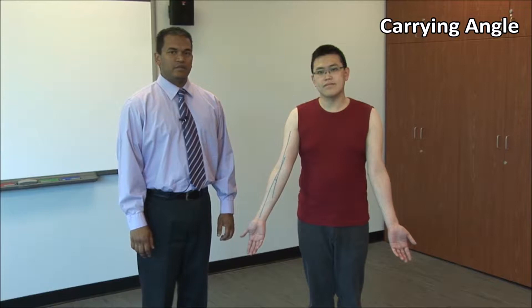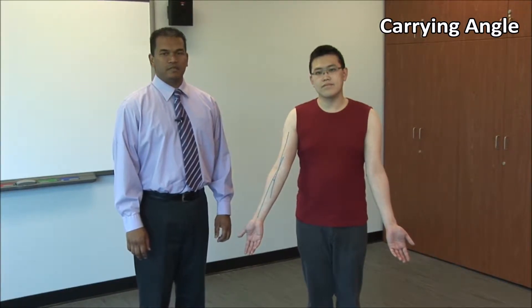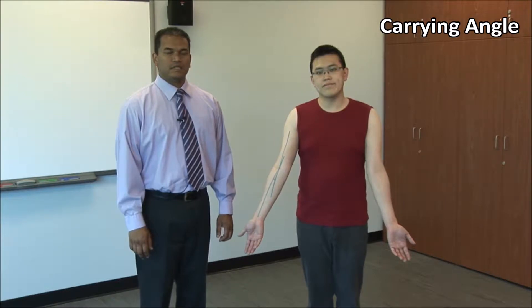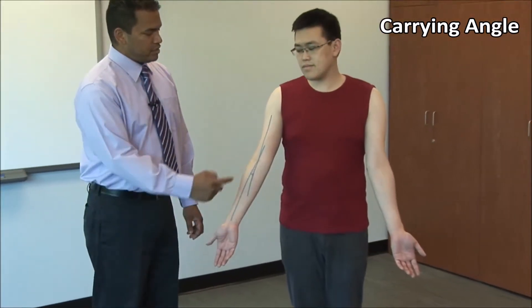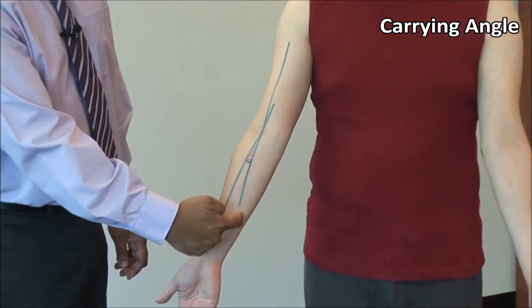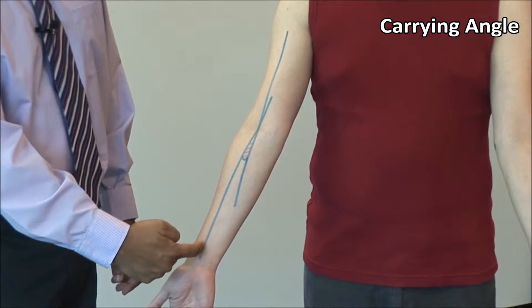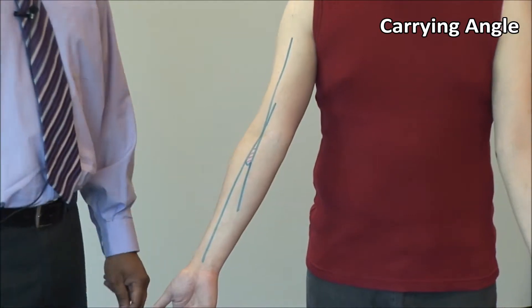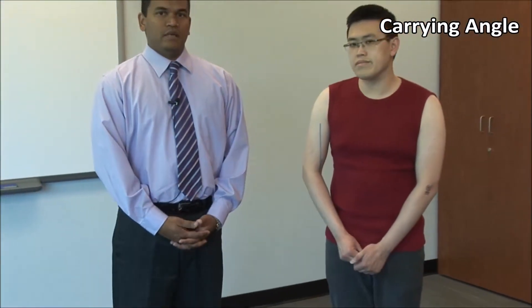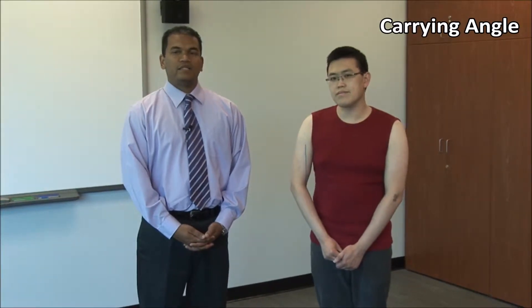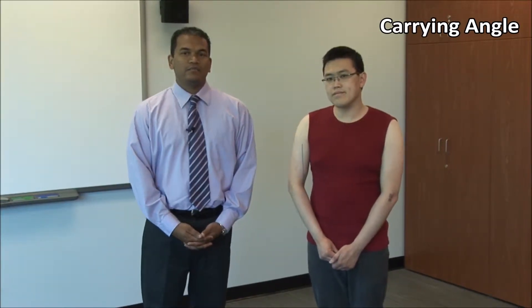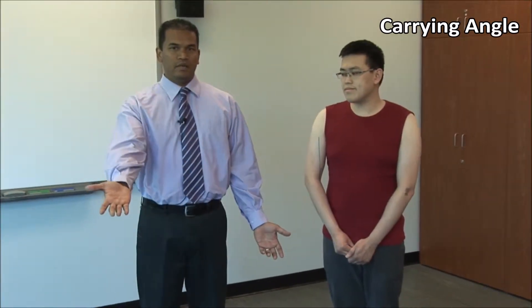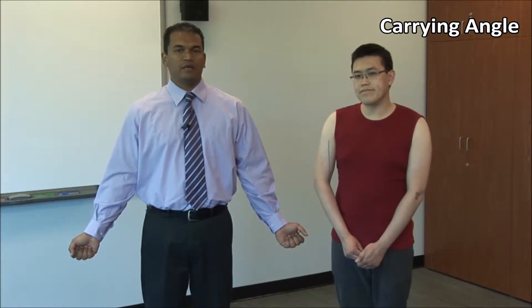On inspection, look at the carrying angle. The elbow has a normal valgus deviation. You can look at this from the front or the back, with the elbow extended and the palm in supination — this is also known as the anatomical position. Imagine a line drawn through the mid-shaft of the humerus intersecting with another line drawn through the middle of the forearm. The angle of intersection is the carrying angle, normally about 5 to 10 degrees in men and 10 to 20 degrees in women. The carrying angle allows us to avoid crashing our hands into our hips while walking and to carry loads without abducting our shoulders.